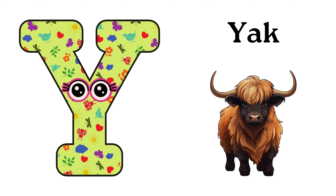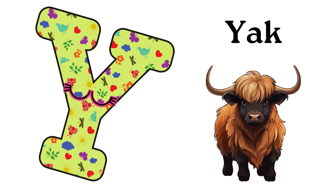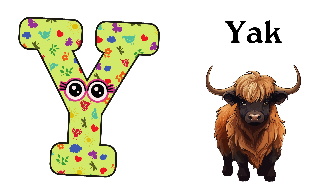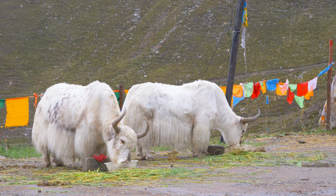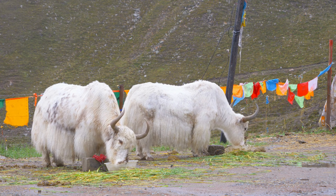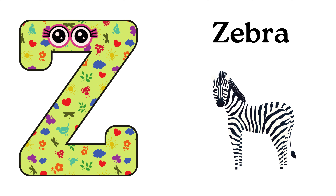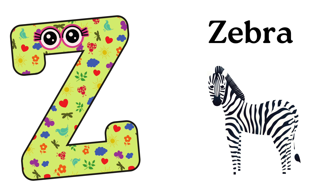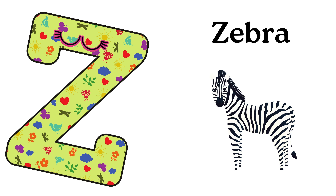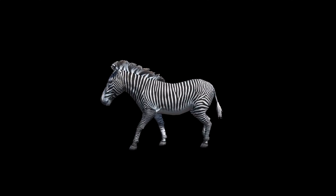Y is for Yak. Y-Yak, Y-Yak, Y-Yak. Z is for Zebra. Z-Zebra, Z-Zebra, Z-Zebra.